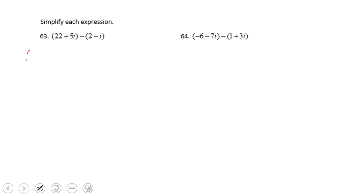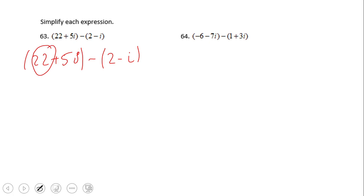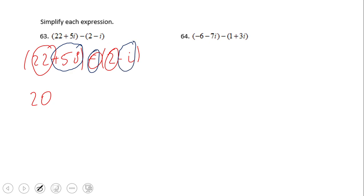Here we have 22 minus 2, which gives us 20. Then we have plus 5i minus negative i, so 5 minus negative 1 gives us positive 6i. The answer is 20 plus 6i.